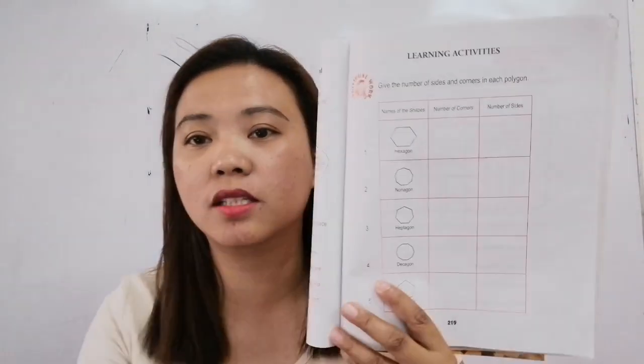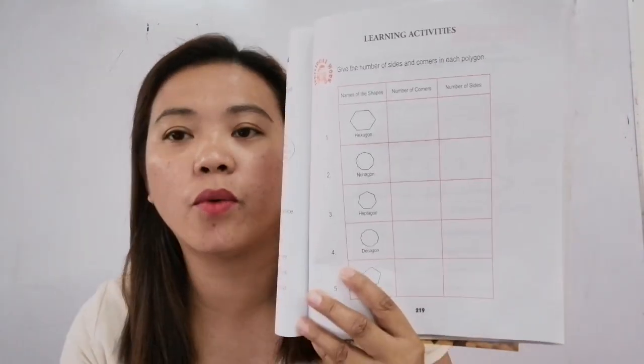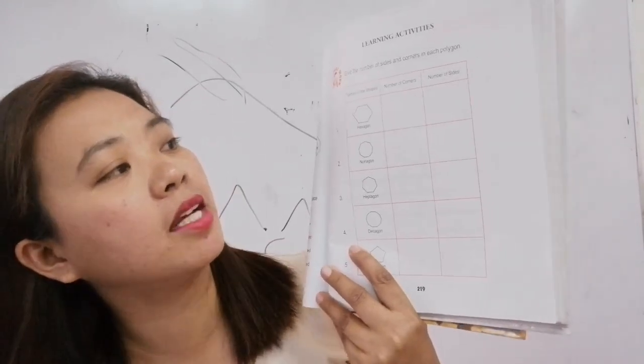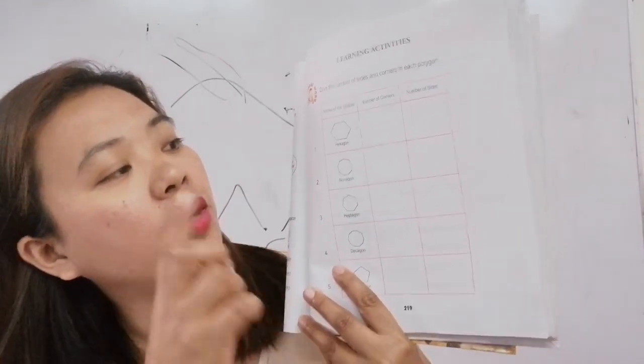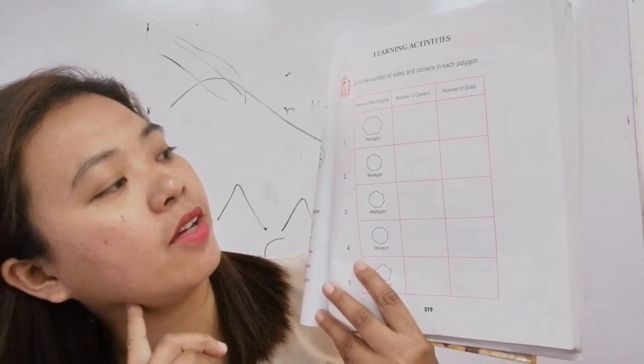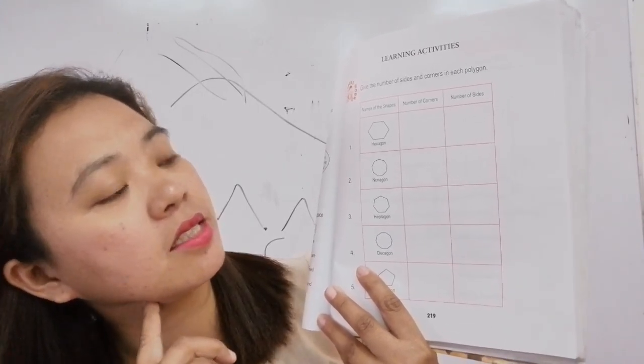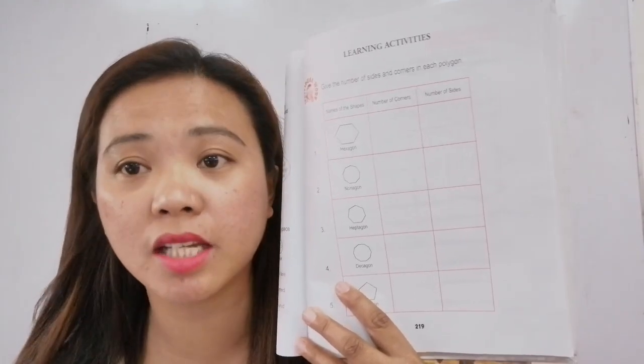Okay, we'll proceed to our math subject review. Please open your book on page 219. Let's review geometry and polygons. Let's start. We have here number one, hexagon. How many corners and how many sides?